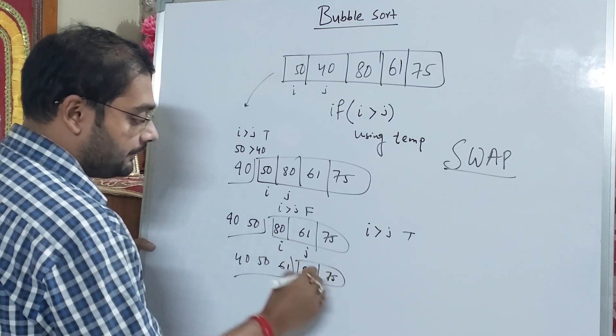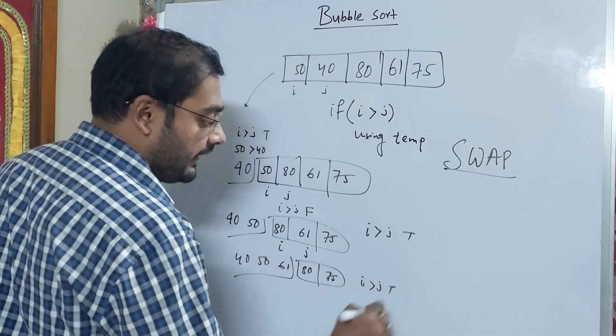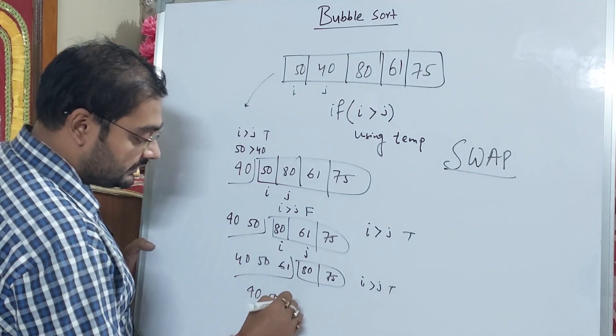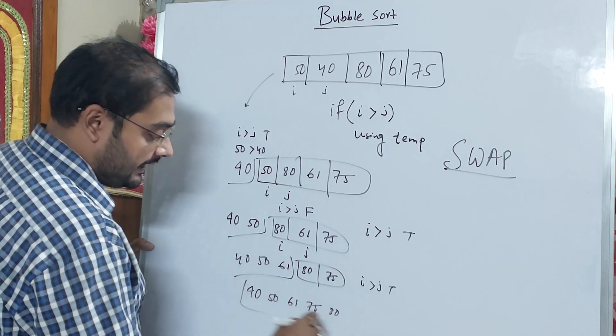So we are checking if I is greater than J. This is true. So the final result is 40, 50, 61, 75, and 80. This is the sorted array.